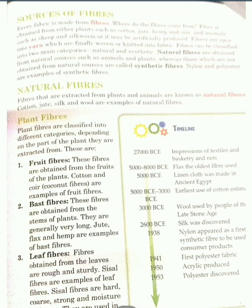To repeat: each fabric is made up of fibers and we have two types of fibers. The first is natural fibers, which are obtained from animals and plants. Fibers extracted from plants and animals are known as natural fibers. Examples include cotton, jute, silk, and wool. If we look at plant fibers, they are classified into the following types.